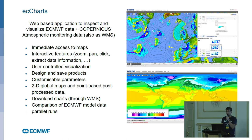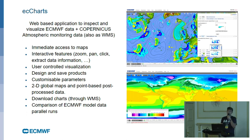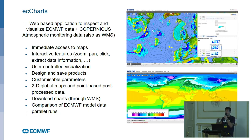ECCharts gives immediate access to maps, which is very important in the meteorological community, especially in weather forecasting. It has interactive features where users can zoom, pan, click, and extract data information in the interface. It has user-controlled visualization because users can generate their own products by combining layers out of the 250 layers we offer, and they can design a product and save it to use later.